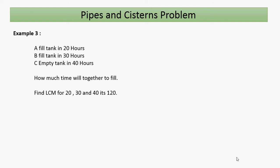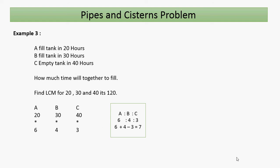Find the LCM of 20, 30, and 40, which is 120. Then: 20 × 6 = 120, so A's ratio is 6; 30 × 4 = 120, so B's ratio is 4; 40 × 3 = 120, so C's ratio is 3. Since A and B fill and C empties: 6 + 4 − 3 = 7. Total time = 120 ÷ 7. That is our answer.